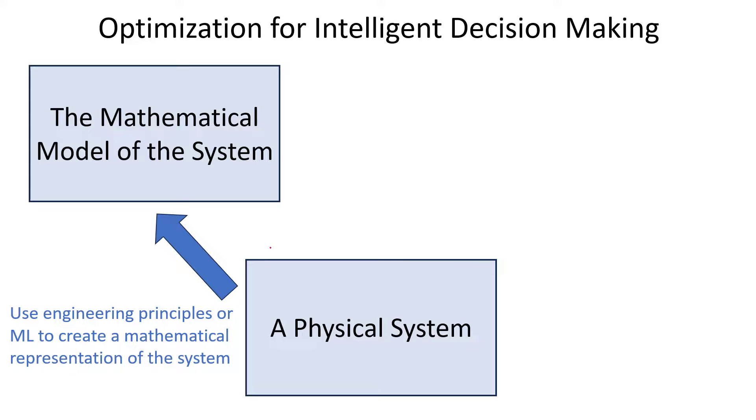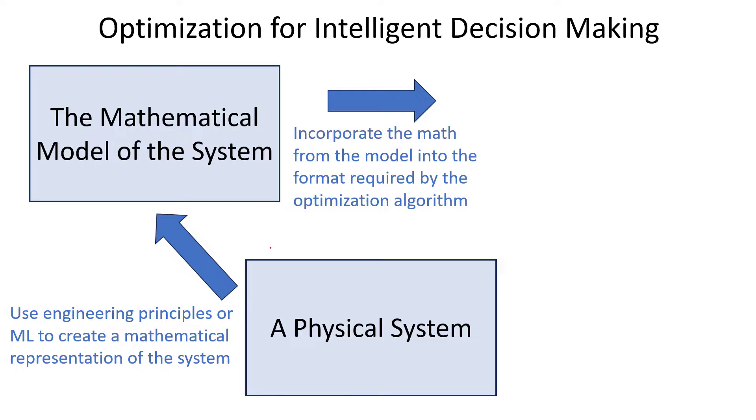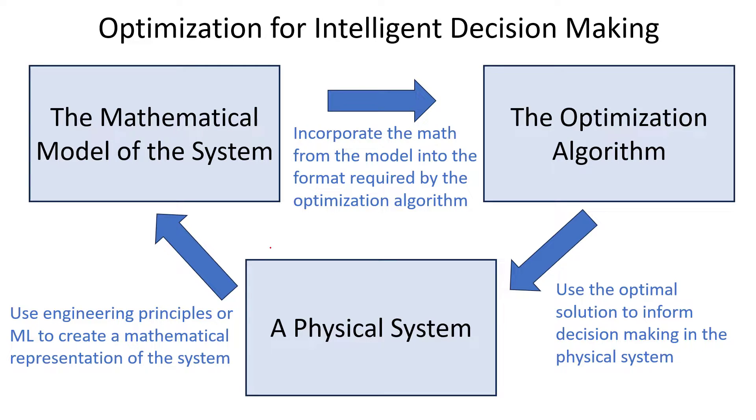Once you have a mathematical representation of your system, you formulate it properly and send it to an optimization algorithm. If you formulate the problem well, there are many optimization solvers available. Python's SciPy toolkit has several optimization solvers built in. Our job is to model the system and formulate our model into the context the optimization algorithm requires. Once you solve the optimization algorithm, you can take those decision variables and feed them into your physical system.